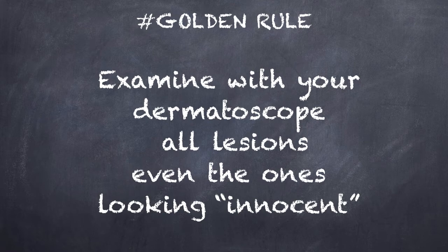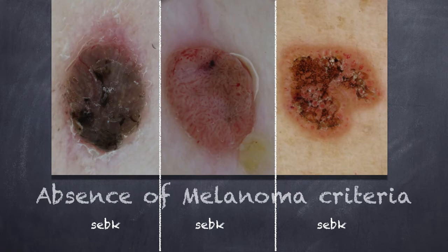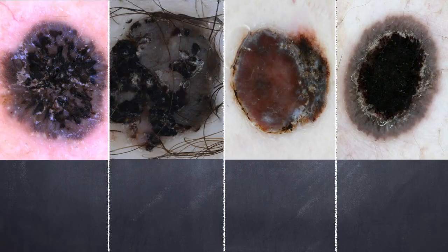Here are the highlights. The golden rule is to examine with the dermatoscope all lesions, even those that look innocent or look like seborrheic keratoses on clinical examination. For nodular seborrheic keratoses specifically, always use the dermatoscope: in these three cases we observe the cerebriform appearance, white color, and the characteristic vessels of seborrheic keratosis with no melanoma features, confirming these are seborrheic keratoses with no melanoma present.